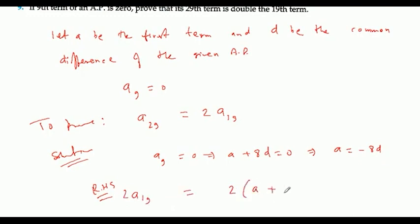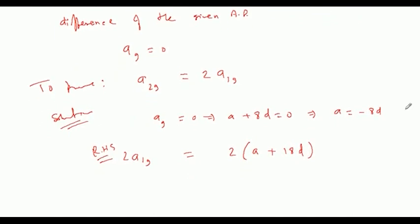9th term हमारा 0 है. 2 into A के जगह पर minus 8D और plus 18D लेते हैं. 2 into में 10D आ जाएगा जो 20D के बराबर हो जाएगा.